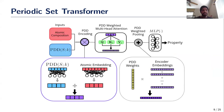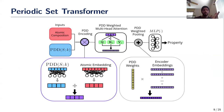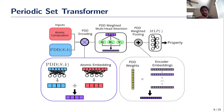We address these with the Periodic Set Transformer. The model has two inputs: the PDD and the atomic composition. We combine this information through PDD encoding, mixing structural and compositional information together, then pass it through a multi-headed attention mechanism altered to account for PDD weights. The individual embeddings are pooled together, reincorporating PDD weights to form a single vector representing the crystal as a whole, which is passed through a multilayer perceptron to get the property value.